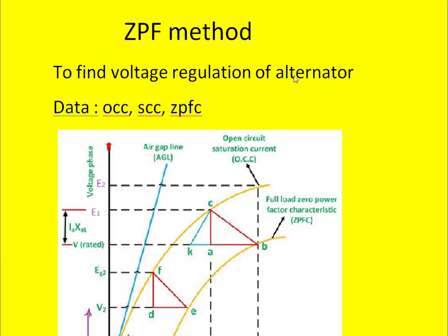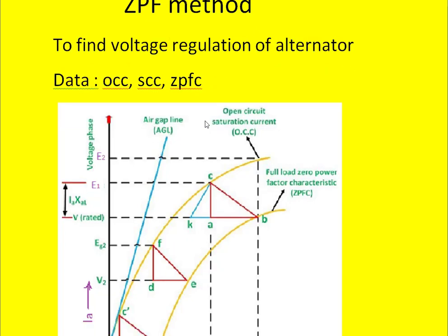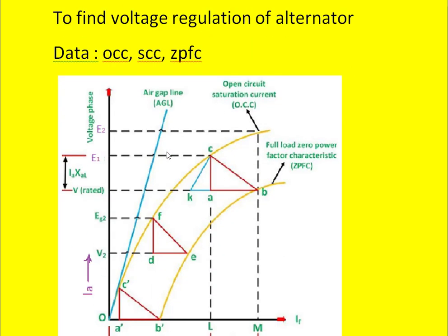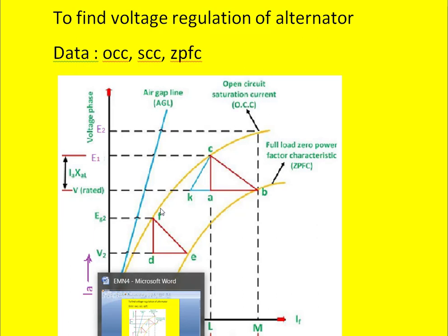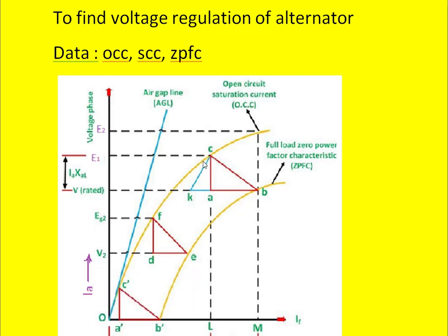To apply this ZPF method we need data of the open circuit characteristic, short circuit characteristics, and the zero power factor full load characteristics. When we draw the graph between field current and the open circuit voltage we get the characteristic called the open circuit characteristic. Then draw a tangent line parallel to the initial portion of the OCC curve — this is called the air gap line.